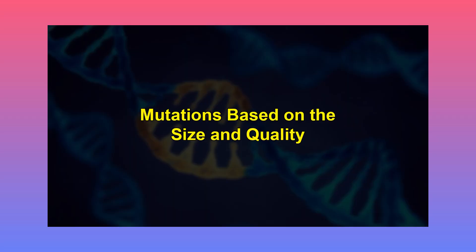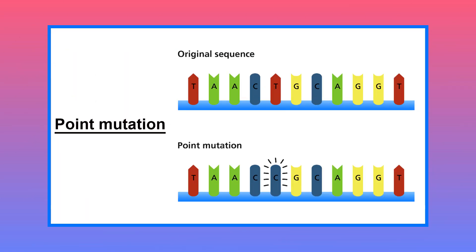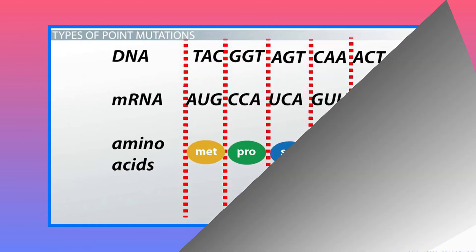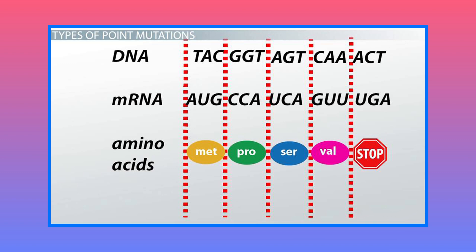Let's now discuss mutations based on size and quality. According to size, two types of mutations have been recognized. The first type is point mutation. When heritable alterations occur in a very small segment of DNA — that is, a single nucleotide or nucleotide pair — then this type of mutation is called a point mutation. Point mutations may occur due to different types of sub-nucleotide changes in the DNA and RNA.